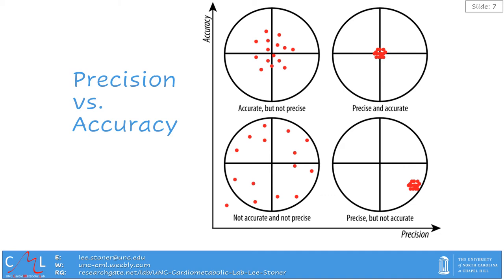Something important to remember when we use any method is the old saying — we have to be confident in the measurements that we are making. We have two constructs of importance which include precision, which is synonymous with reliability, and accuracy, which we also refer to as validity. Both are important, but for different reasons.